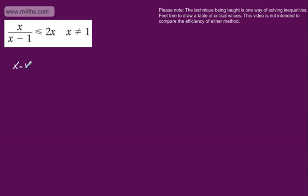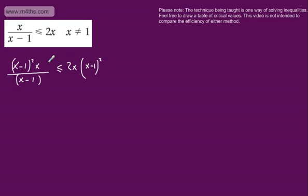So if I do that, I'm going to have x minus 1 squared multiplied by x over x minus 1, which is now going to be less than or equal to 2x multiplied by x minus 1 squared. This cancels off and we'll have x minus 1 multiplied by x is less than or equal to 2x times x minus 1 squared.